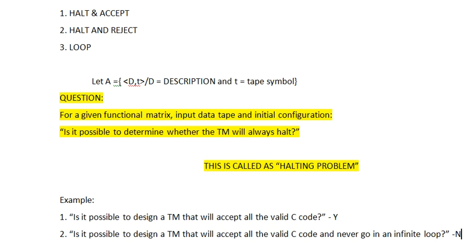You cannot predict that for a particular C code with a loop, it will never run infinitely. For example, if I use a for loop or a while loop with a condition that runs up to infinity, that loop will go to infinite. You cannot directly say it's predictable — it is possible that it will go into an infinite loop. Unless and until we run the code, we can't say whether it will halt or not.